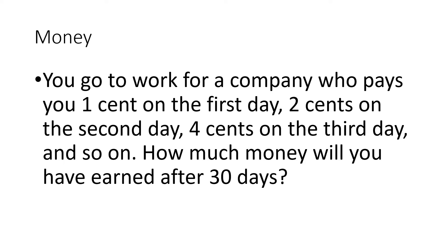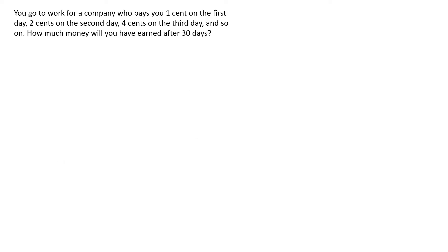Here's the first problem: you go to work for a company that pays you one cent on the first day, two cents on the second day, four cents on the third day, and so on. How much money will you have earned after 30 days? This problem is asking for a sum, since each day you add to your total. The sequence is 0.01, 0.02, 0.04 — and we can see the pattern: each term is multiplied by two. That's a common ratio, which is a clear indication we're dealing with a geometric sequence.